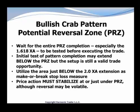We want to utilize that area just below the 2.0 XA extension as the stop loss measure. For the bullish crab, we're looking for price action that must stabilize at or just under the PRZ. Again, the price action — we must have that expectation of volatile behavior. But as long as we don't exceed that 2.0 and we see the change in the character of the price action, we do have a valid structure.